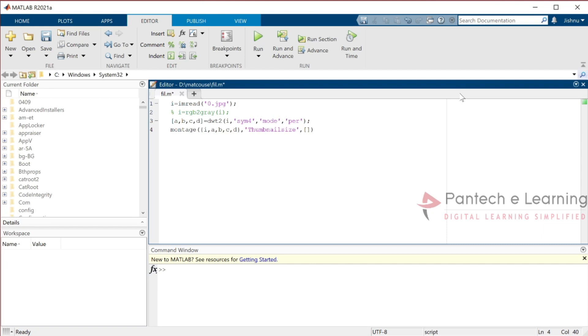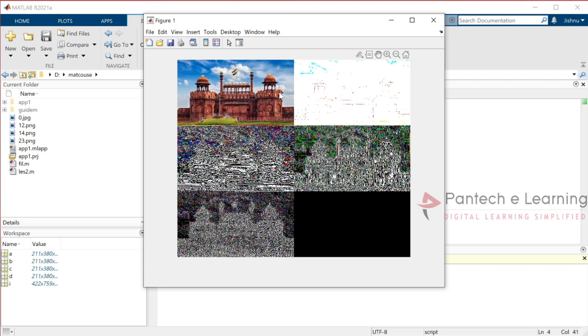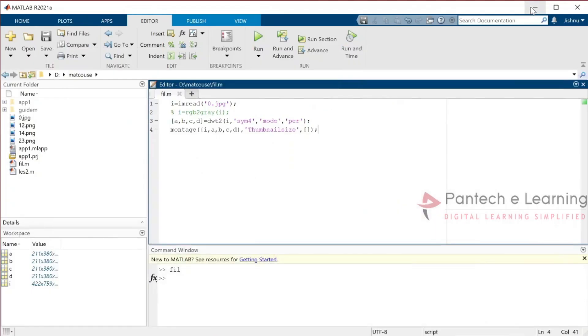Now let us run the image. So this turned as the five different types of image where this is the original, first order, second order, third order, and fourth order. It is different parts.